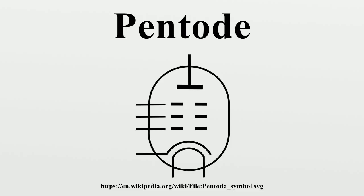Types of pentodes: Variable transconductance tubes in general are those with a non-uniform grid wire spacing to allow them to handle a wide range of input signal levels without excessive cross-modulation distortion, and so useful in radio frequency stages where automatic gain control is applied to the pentode. The first commercial variable mute tubes were the 550 and 551 developed by Stewart and Snow around 1929. Other examples include: